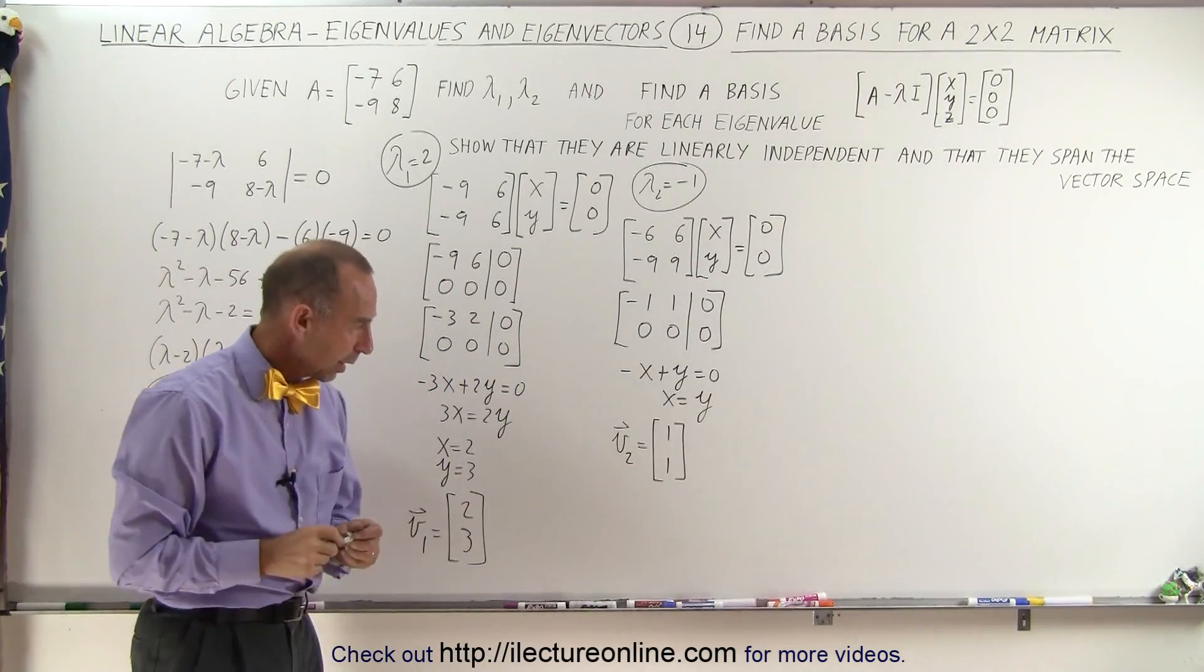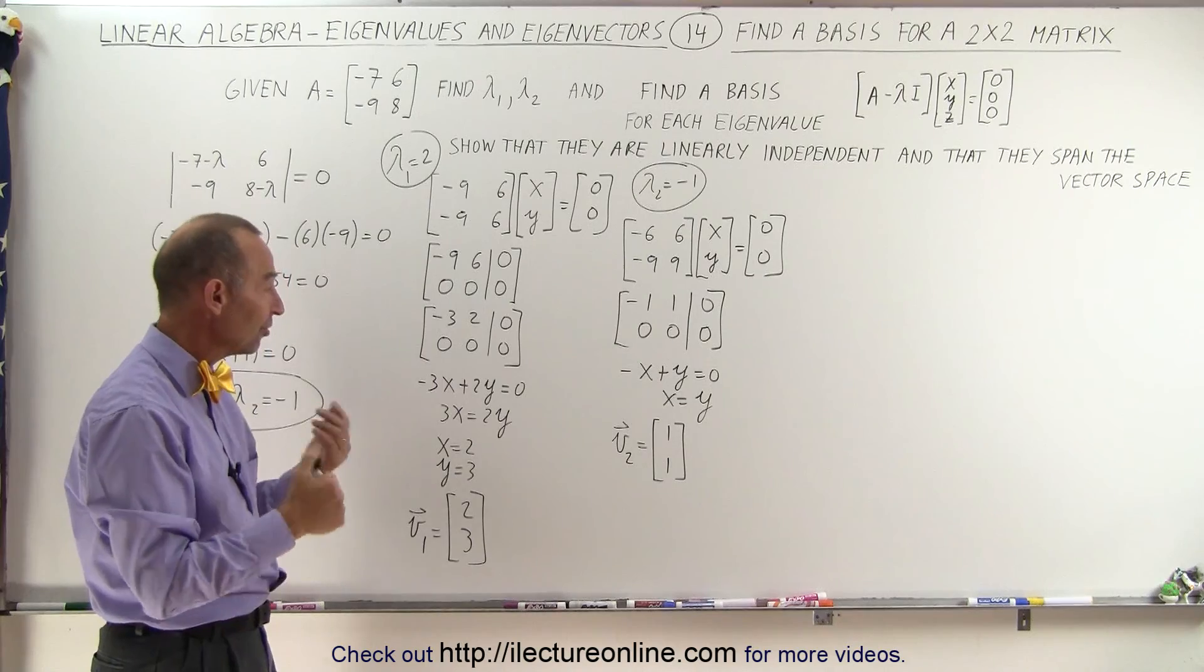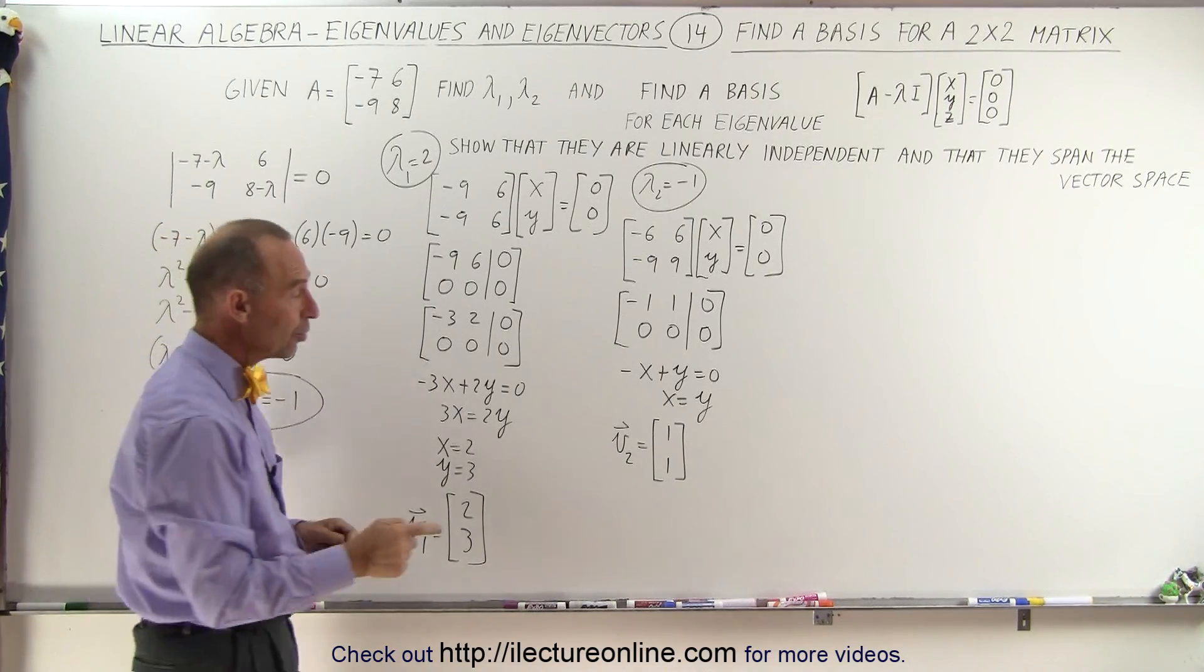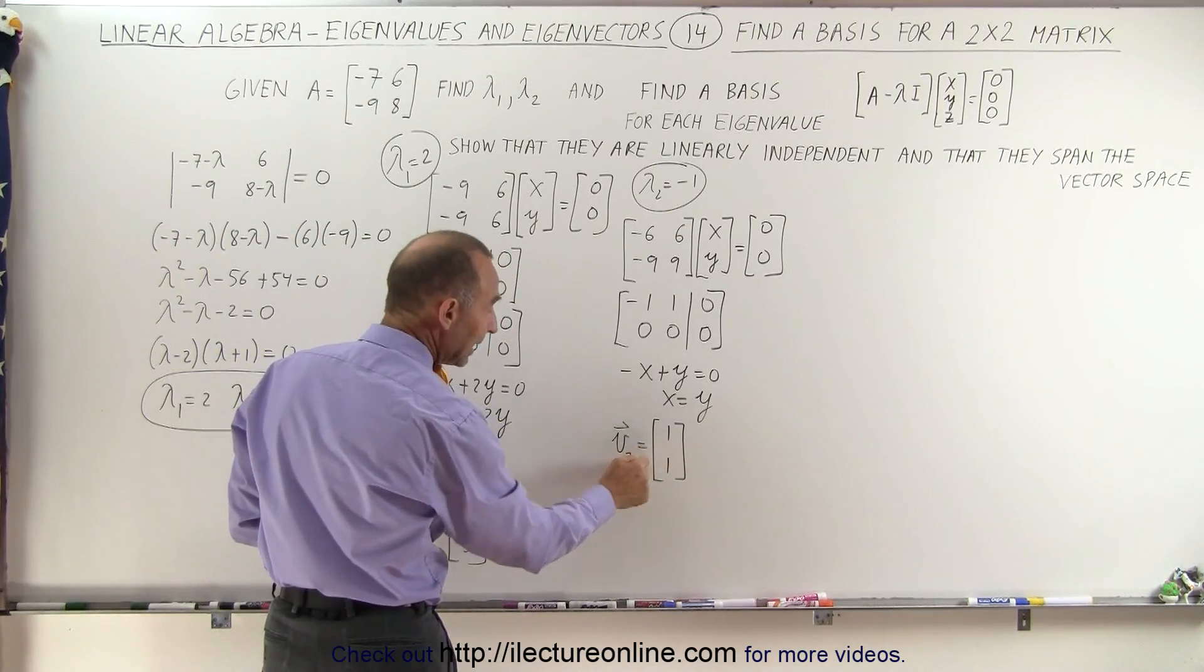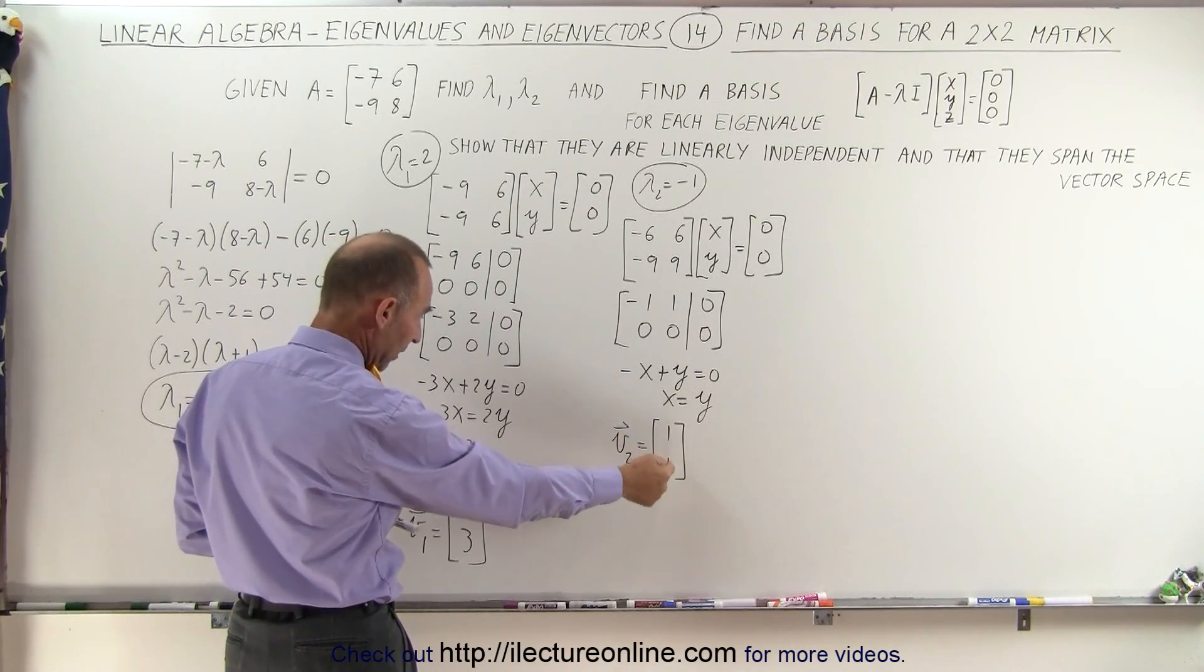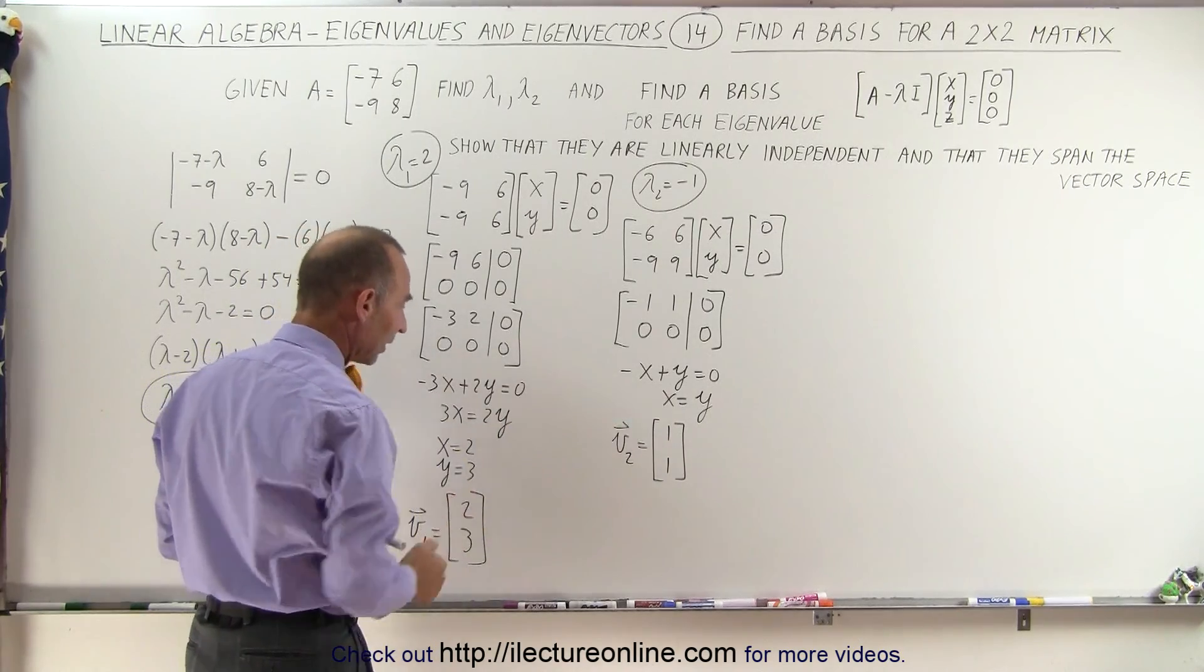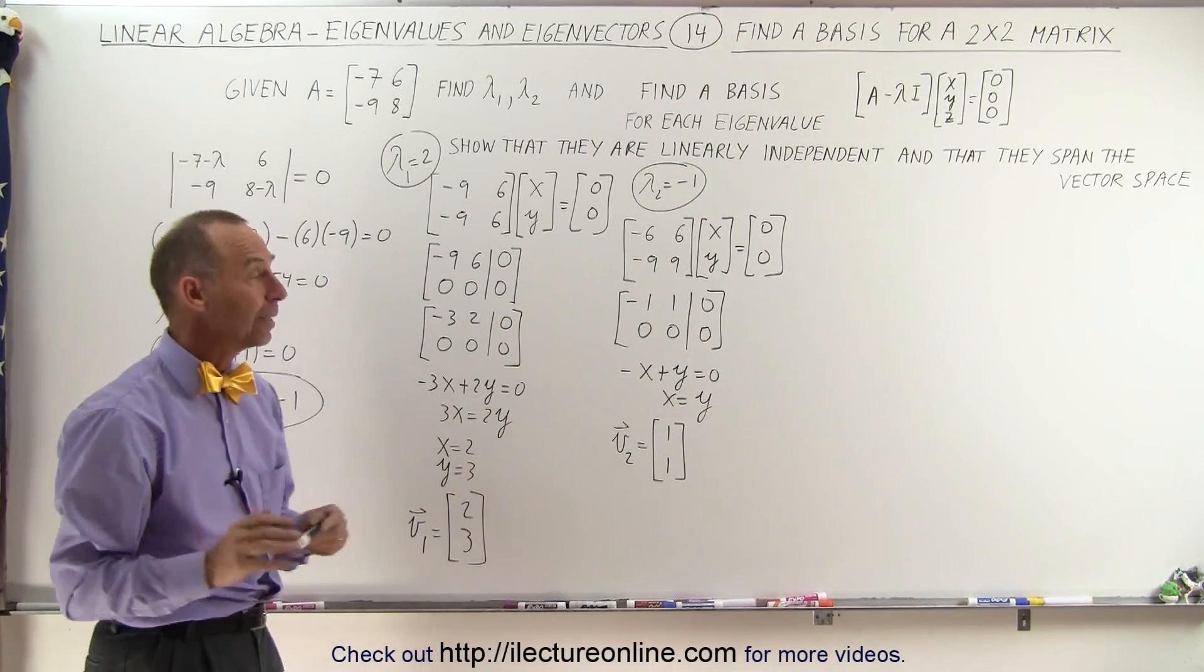Now, are those two vectors linearly independent? And the answer is yes, because there's no way that you can multiply this vector by any constant to get this vector. So multiply this times 2, you get a 2 in the top and a 2 in the bottom. You cannot multiply this by any constant and get the second vector, so they're linearly independent.